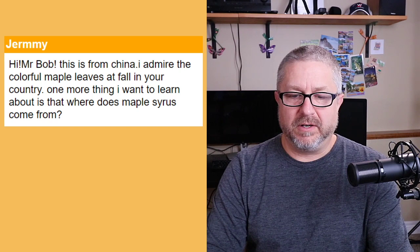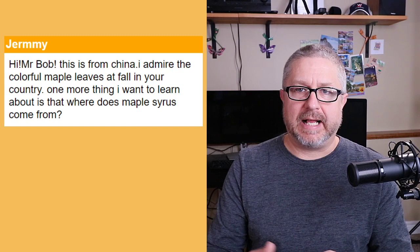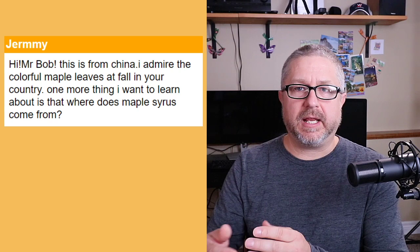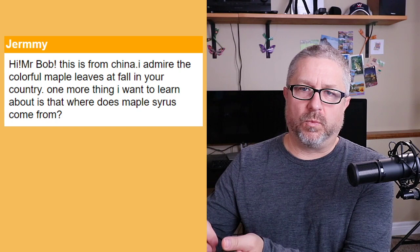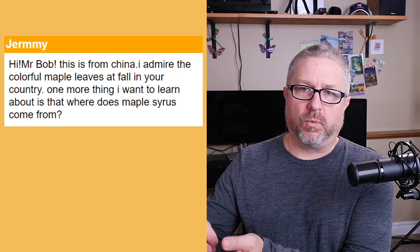Jeremy from China asks: where does maple syrup come from? Maple trees in the spring, as it warms up, the sap in the trees starts to run — it's almost frozen in the winter but starts to run as spring begins. They can get sap from the maple tree, then they warm the sap up so the water evaporates, and eventually it becomes maple syrup. So maple trees produce sap in the spring and we use that sap to make maple syrup.